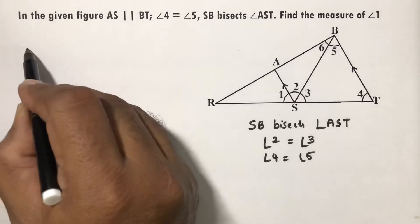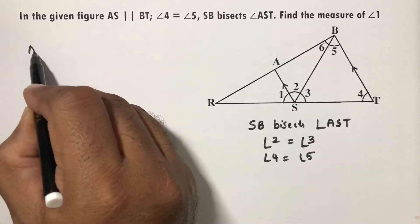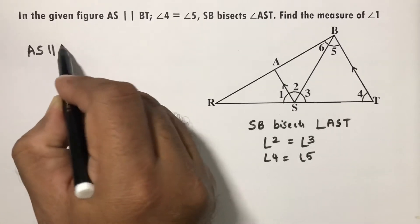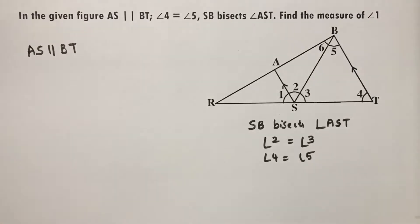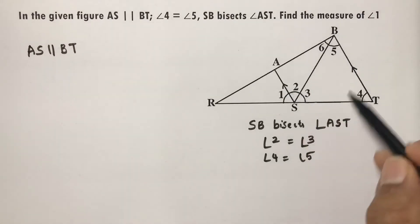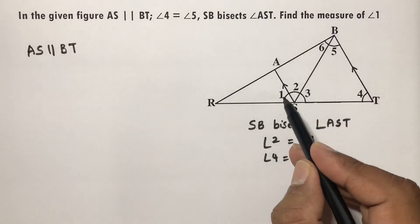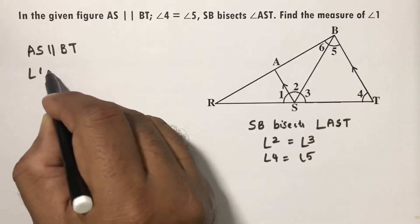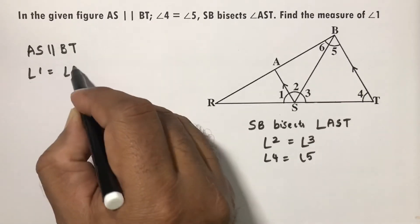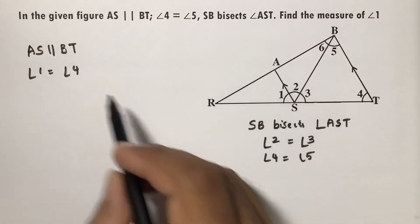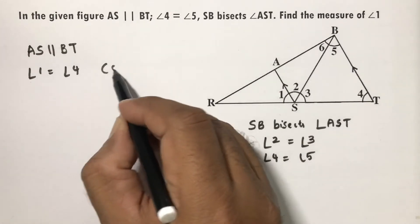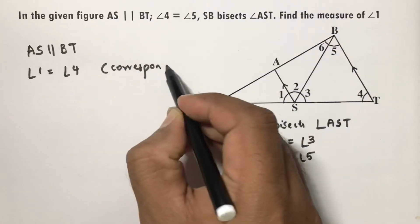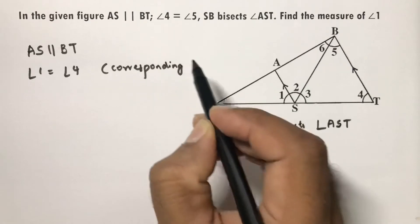Since AS is parallel to BT, angle 1 equals angle 4, because of corresponding angles as the lines are parallel.